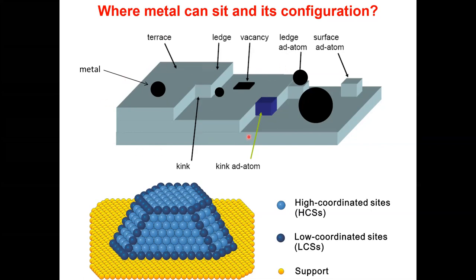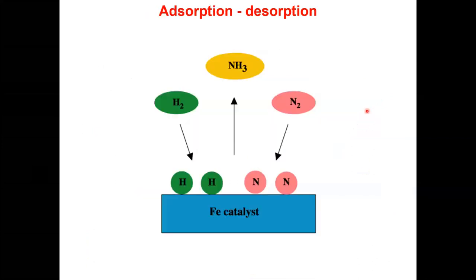Coming back to where the metal can sit on the surface — just imagine metal is sitting somewhere on the support. You must be aware of the adsorption-desorption phenomenon. For example, in ammonia synthesis, hydrogen and nitrogen interact with each other on an Fe catalyst. Hydrogen comes and sits on the Fe catalyst, and nitrogen also comes and sits on the Fe catalyst.